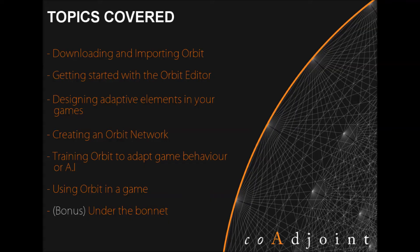This tutorial series will show you how to: download Orbit from the Unity Asset Store; get started with the Orbit Network Editor; design adaptive elements for your game; create an Orbit Network; train Orbit to adapt game behaviour or AI; and use Orbit in a game, with an example project.